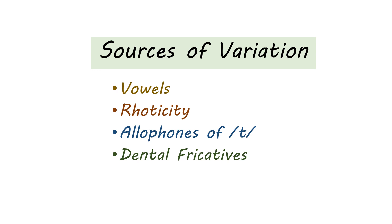In this lesson, we've covered the four places where English dialects tend to vary in pronunciation: the vowel system, where vowels shift because English has a crowded vowel space; rhoticity, a change that arose in British English and spread to some dialects but not others; allophones of T, where T in the middle of words drifts differently across dialects; and dental fricatives, which are often modified in dialects with significant contact with non-native speakers. I've given you a lot of information here — this lesson is meant to serve as a reference you can return to throughout the coming weeks.